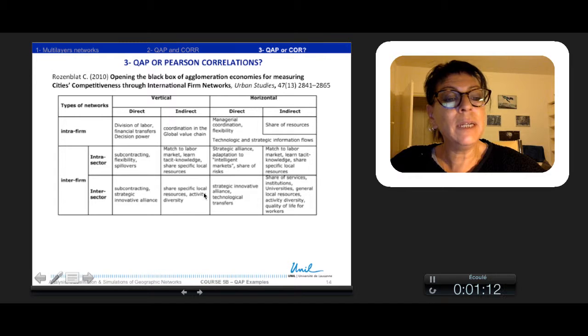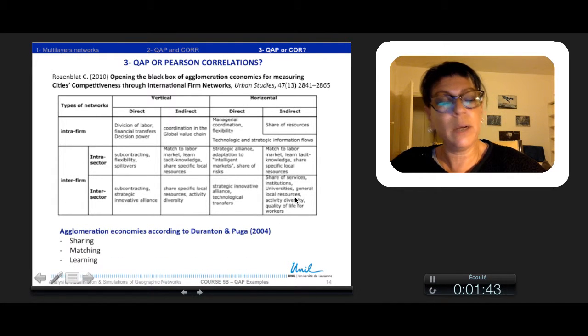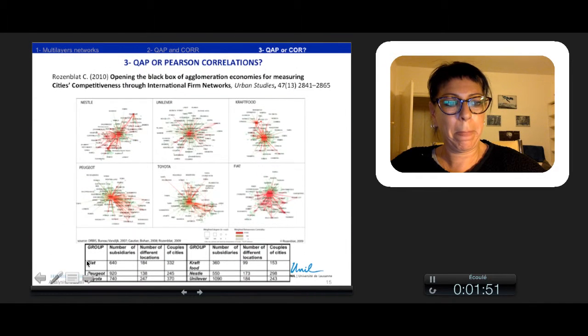These linkages in business and economic theory can be inside firms or between firms, intra- or inter-sector. They are organized in vertical or horizontal complementarity between firms. Their relation can be direct or indirect. Indirectly, for example, firms share local resources, services, or institutions.